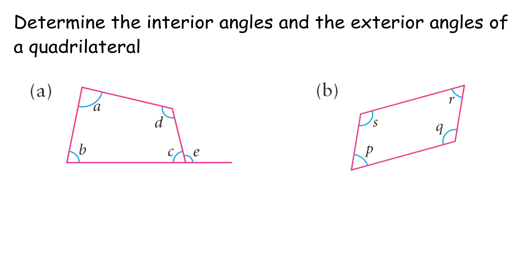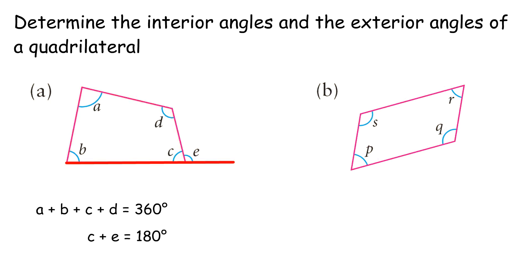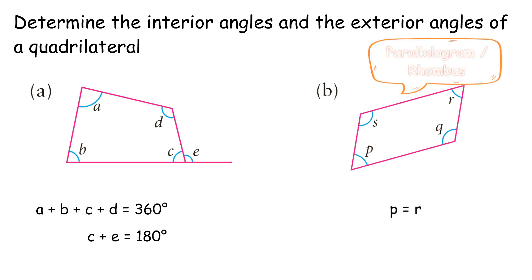Determine the interior angles and exterior angles of a quadrilateral. A: The sum of the interior angles of a quadrilateral is 360 degrees. The sum of an interior angle and its adjacent exterior angle is 180 degrees. B: The opposite angles in a parallelogram or rhombus are equal.